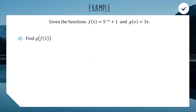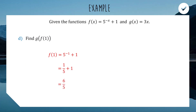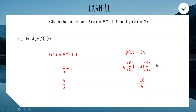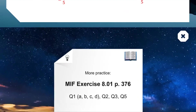For the final question, we find g evaluated at f of 1. First, sub x equals 1 into f of x: 5 to the minus 1 is one fifth, and one fifth plus 1 is six fifths. That's our answer for f of 1. Now substitute six fifths into g of x: g of six fifths equals 3 times six fifths, giving an answer of eighteen fifths.